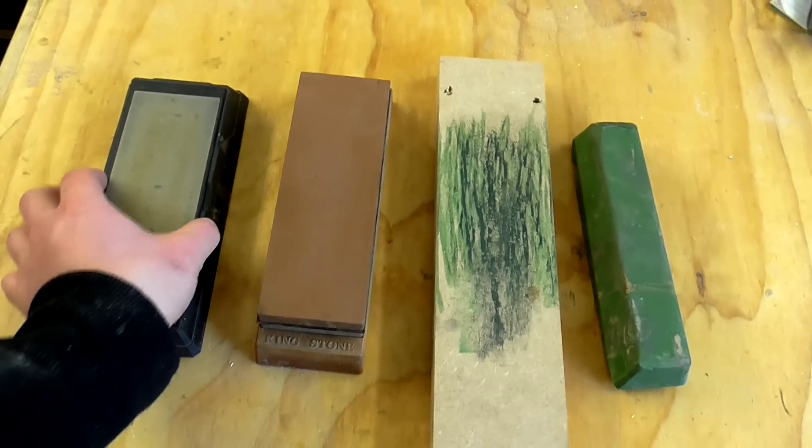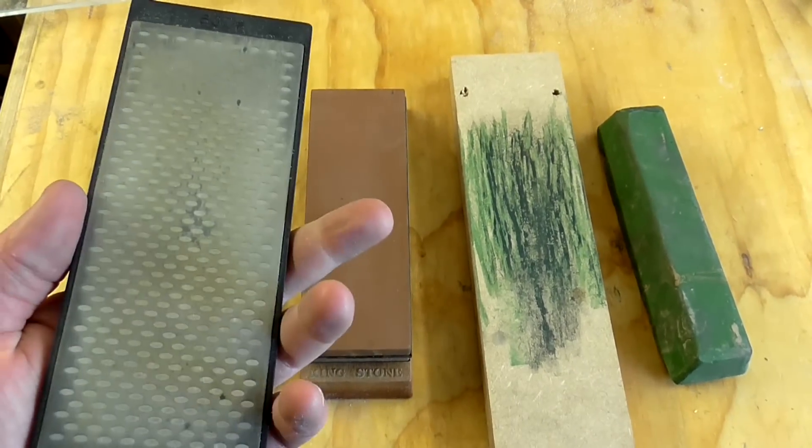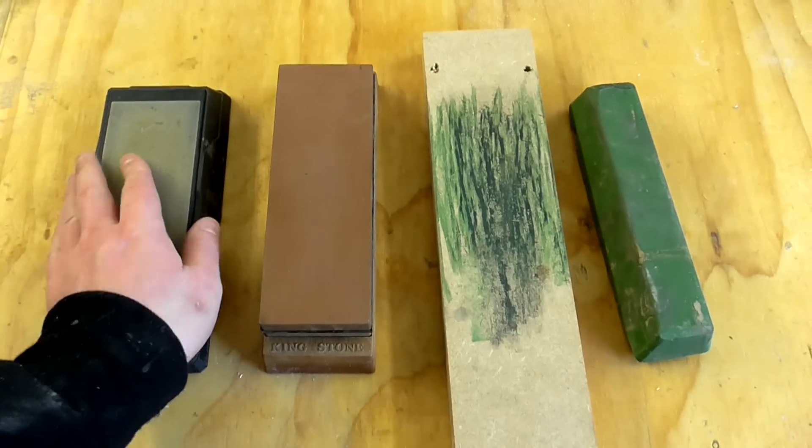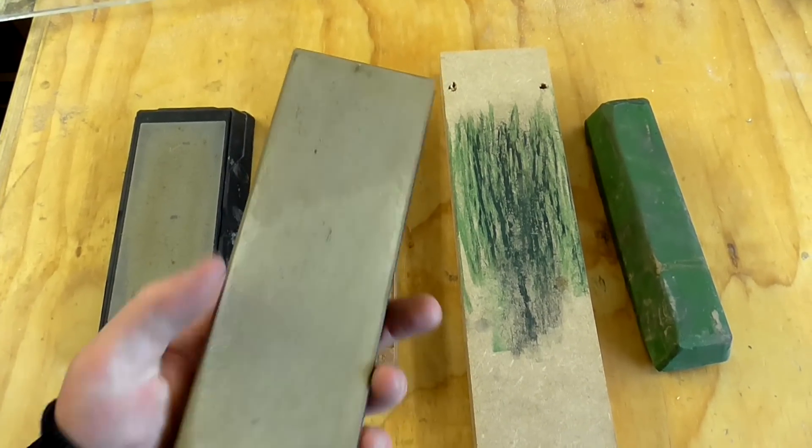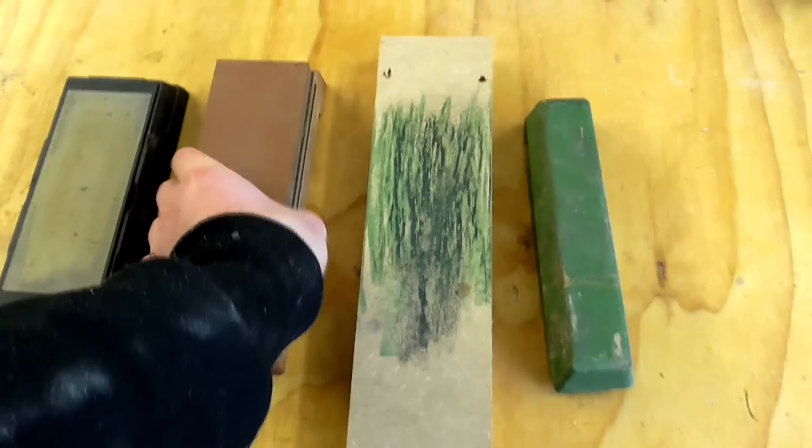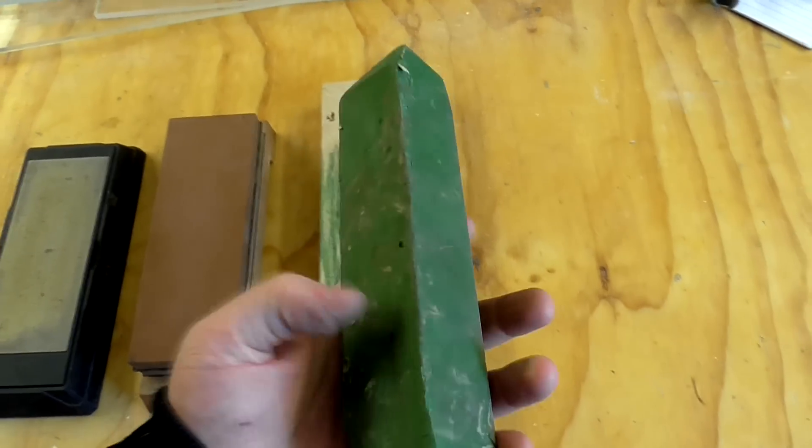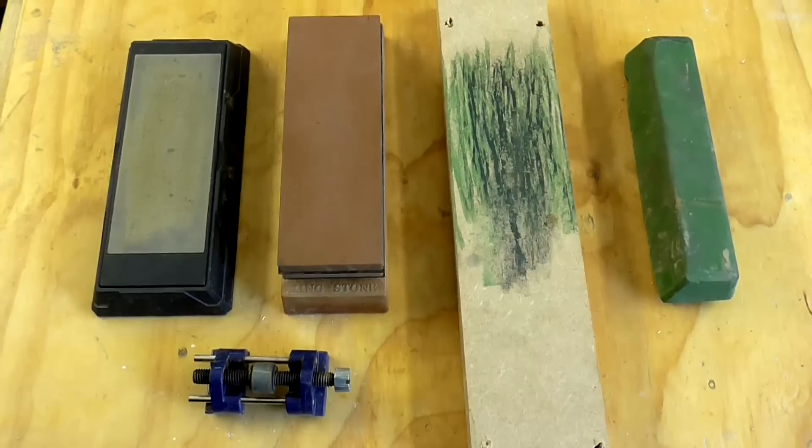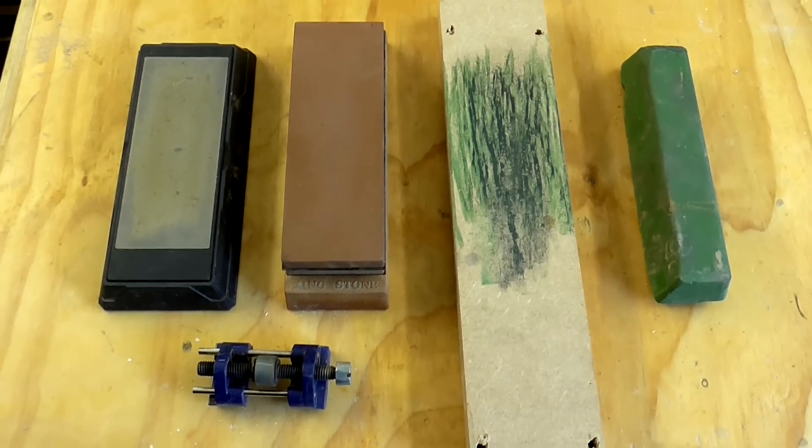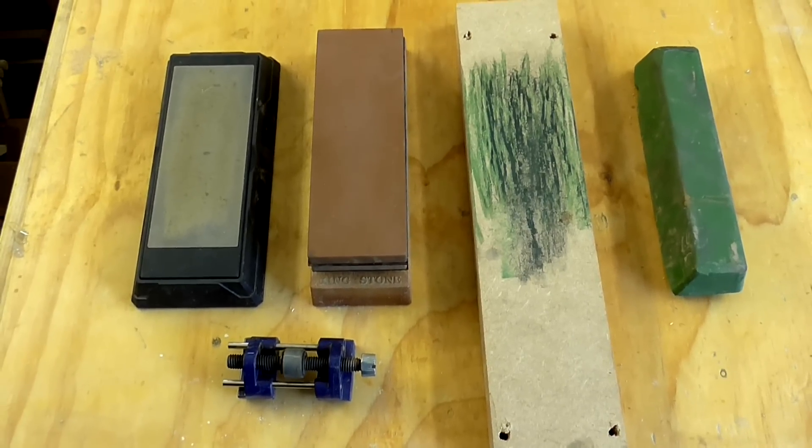This is generally what I use for sharpening. I start on this diamond plate which is 360 and 600 grit then I use this water stone which is 1000 and 6000 grit and finally I use a piece of MDF charged with this green polishing compound and I also use one of these honing guides. I will include some Amazon links to all of these products in the description box below this video if you're interested in checking any of them out.